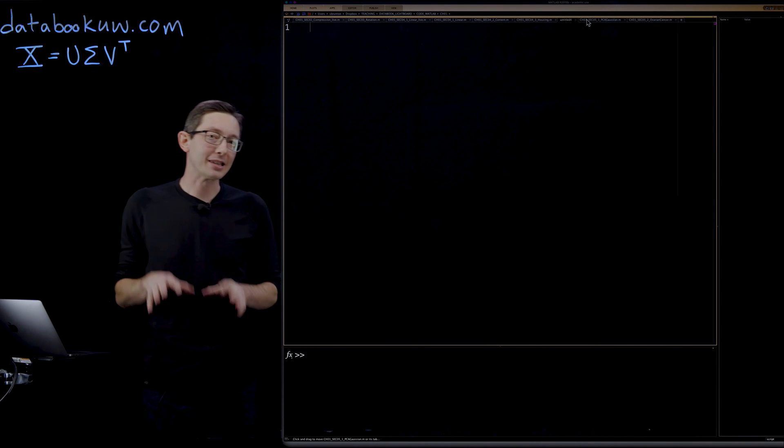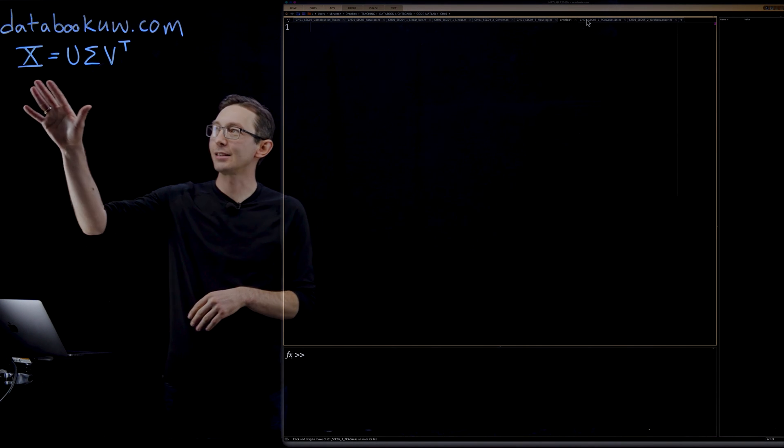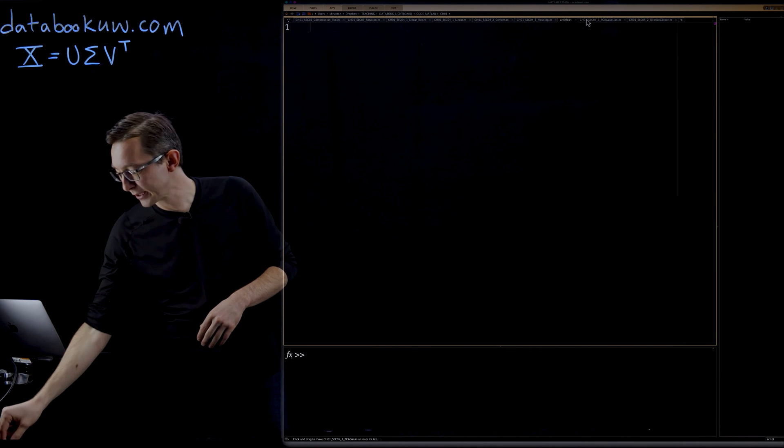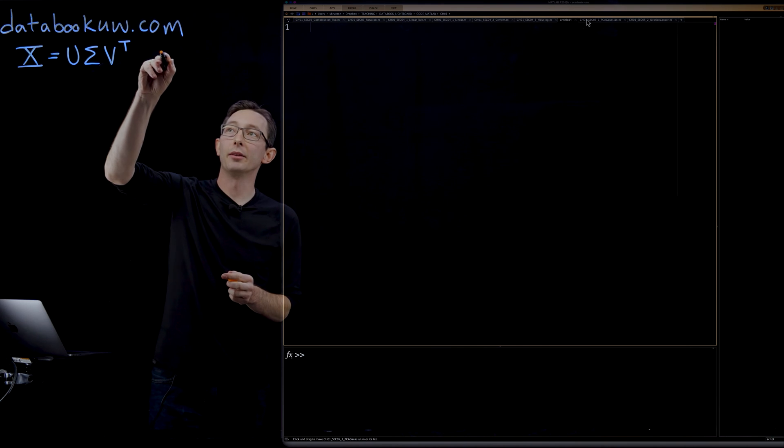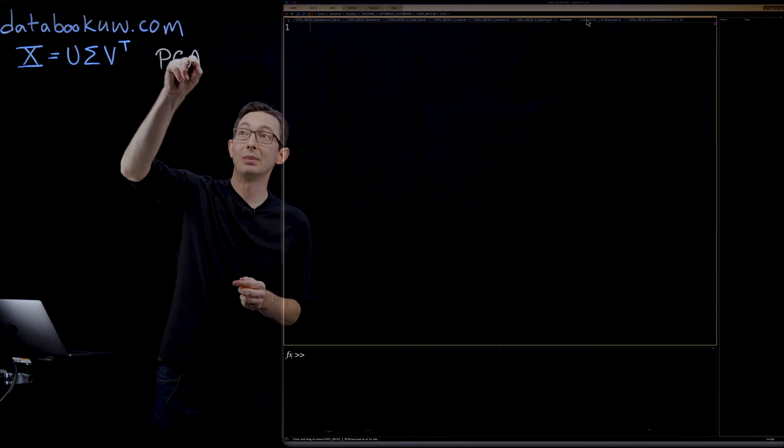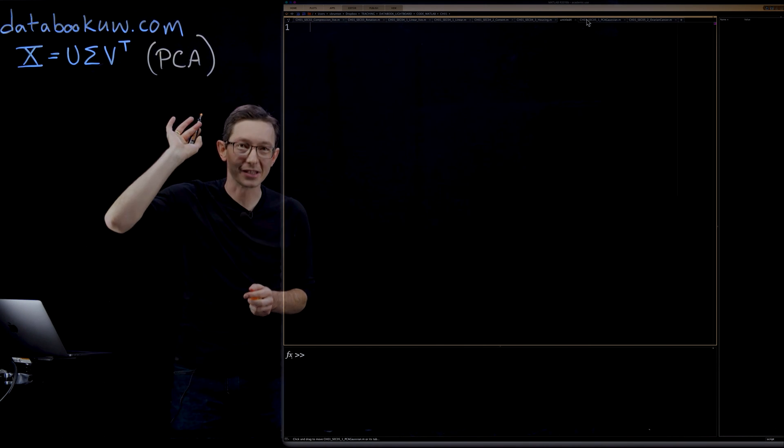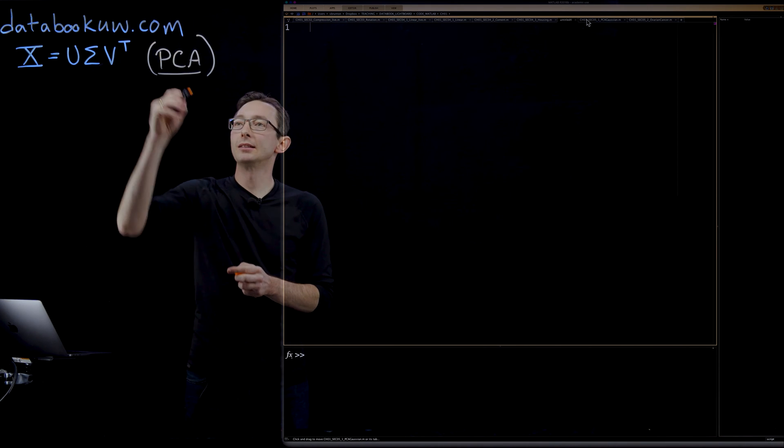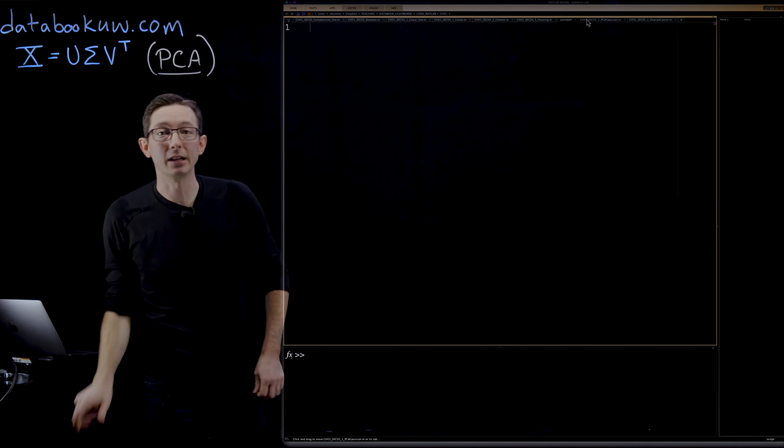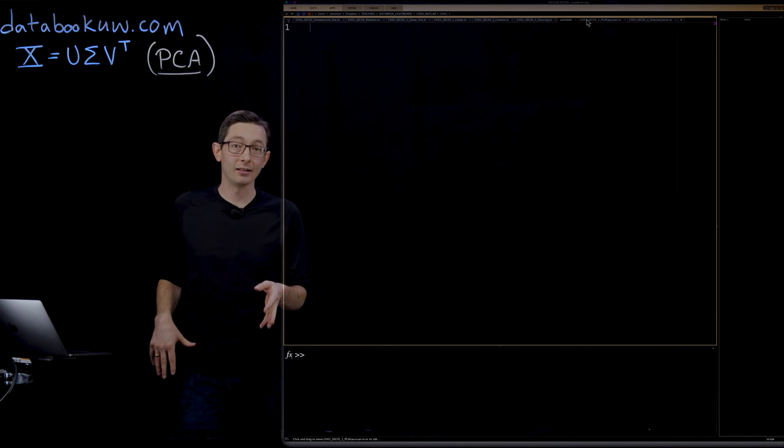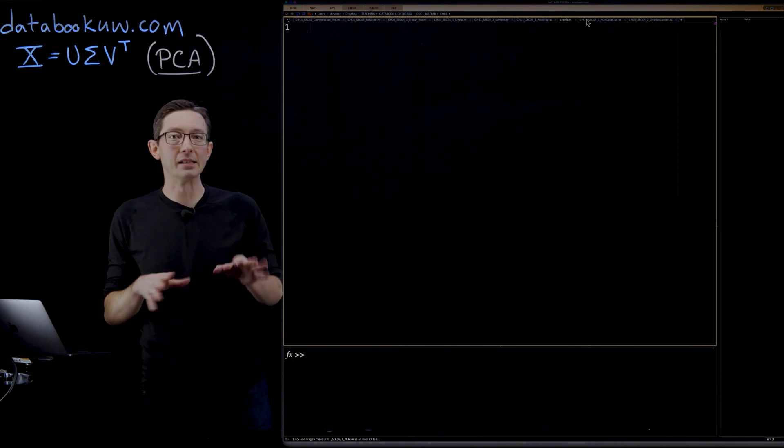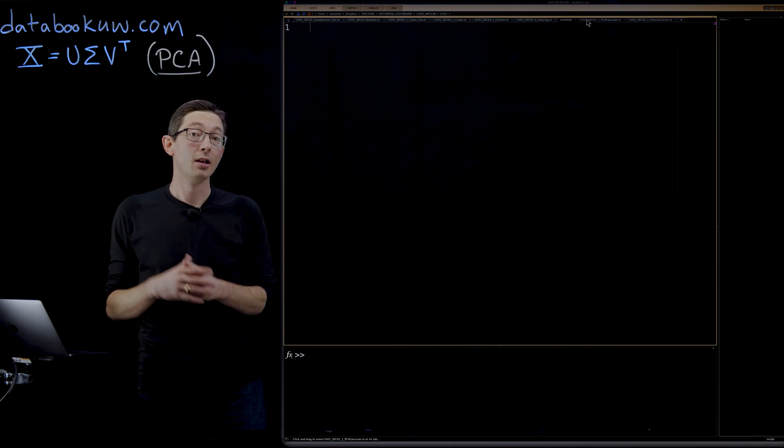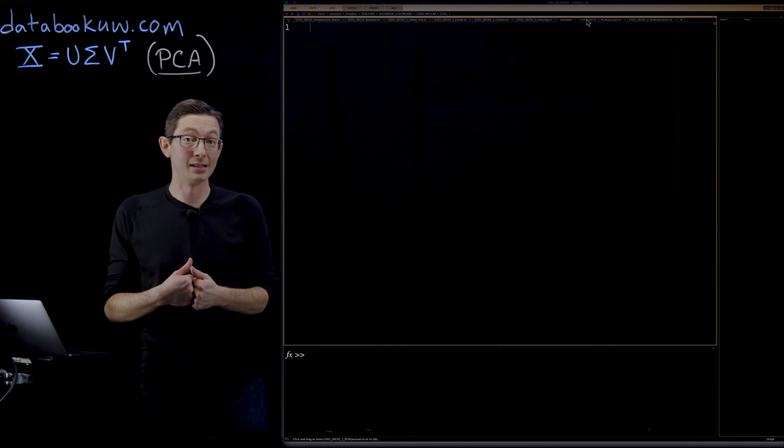Welcome back. We're talking about the singular value decomposition X equals U sigma V transpose, and now we're going to talk about how you can use this to compute the principal component analysis, the PCA, which is one of the most important techniques in dimensionality reduction in all of statistics and data analysis. It's been around for over a hundred years, and I'm going to walk you through just a bit of the basics of how to use the SVD to compute PCA for a couple of data examples.